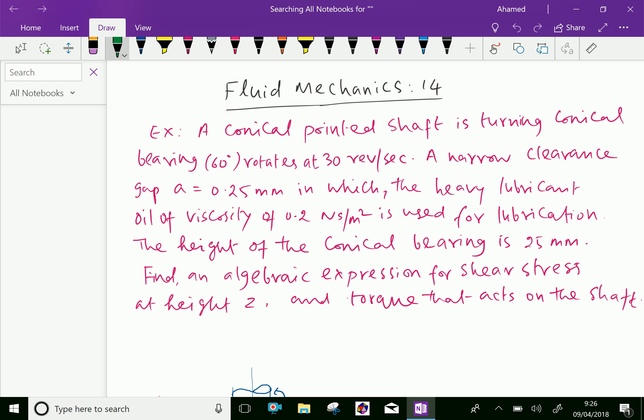Example: a conical pointed shaft is running conical bearing of 60 degrees rotates at 30 revolutions per second. A narrow clearance gap A equal 0.25 mm in which the heavy lubricant oil of viscosity of 0.2 Newton second per meter square is used for lubrication. The height of the conical bearing is 25 mm. Find an algebraic expression for shear stress at height Z and torque that acts on the shaft.